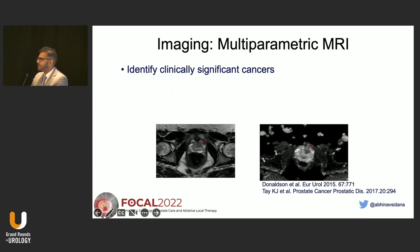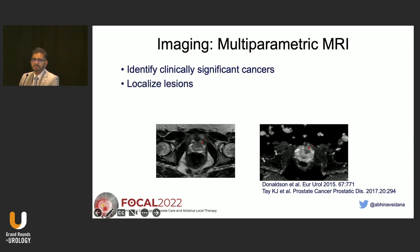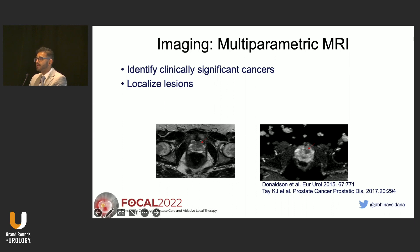The imaging modality of choice — and this is consensus among all experts — is MRI. This is the first modality which helps us identify clinically significant cancer and gives us the location of the cancer. You want to destroy the cancer, so you want to see it and know where it is to destroy it properly.